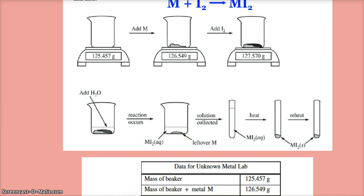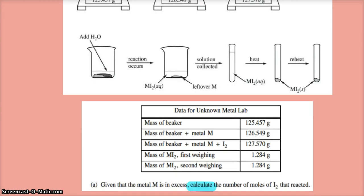I add water, the reaction happens, so I've got MI2 in the solution and leftover M because it reacted until all the iodine was gone. I collect the solution which is just MI2, heat it and reheat it, and I'm left with the MI2 solid. So I drove the water off and here's the data in table form.